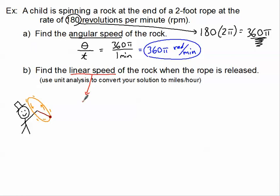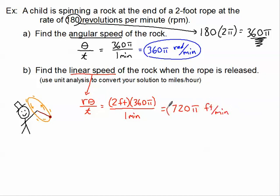Okay, so linear speed is the radius times the angle divided in time. I do know that it's a two-foot rope, so we're talking about two feet. And I do know the angle we just found was 360 pi. And that's all happening in one minute. So we now know that this rock is traveling 720 pi feet per minute. That's how fast we're going.